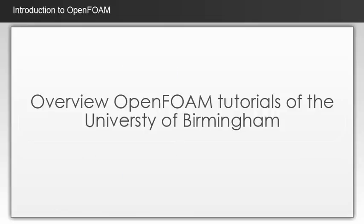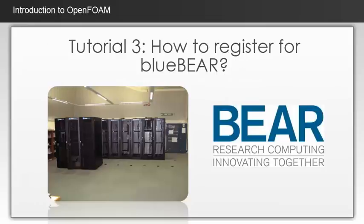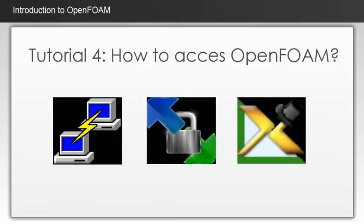Now, an overview of the contents of the tutorials will be given. In tutorial 2, the basic viewing controls in Insight 10.1 are shown. Insight can be used to view the geometry, the mesh, and to post-process the results from OpenFoam. In order to use OpenFoam, you need to register for the BlueBear cluster. The registration process is given in tutorial 3. Tutorial 4 will show you how you could access OpenFoam and which software you need to install on your own machine.